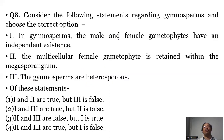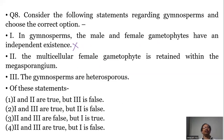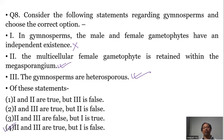Question number eight: Consider the following statements regarding gymnosperms and choose the correct option. Statement one — the male and female gametophyte have independent existence. This is wrong, because the female gametophyte in gymnosperms and angiosperms is not independent; it does not have a free independent life. Statement two — the multicellular female gametophyte is retained within the megasporangium or ovule. True. Statement three — gymnosperms are heterosporous. True. So the correct option is number four, which states that two and three are true but one is false.